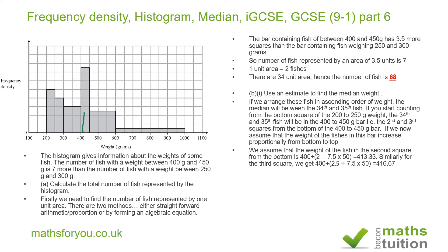For the 35th fish, we use 2.5 units in: 2.5 divided by 7.5, multiplied by the width of 50. That gives a value of 416.67 grams. Adding 413.33 and 416.67 then dividing by 2 gives a figure of 415 grams.